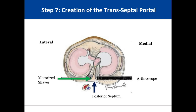Here we show a pictorial drawing to plan out the creation of the transeptal portal. Once the posteromedial and posterolateral portals are made, the arthroscope is positioned in the posteromedial portal and advanced laterally to view the posterior septum. A motorized shaver can then be placed through the posterolateral portal to assess the proper trajectory for perforating the septum, with views from the arthroscope in the posteromedial compartment.